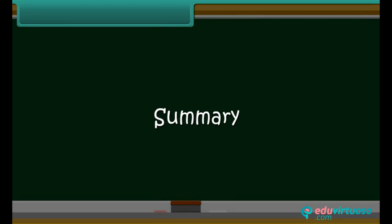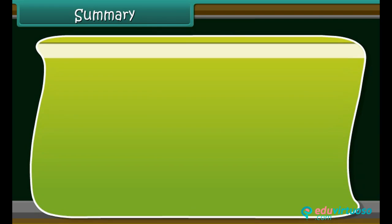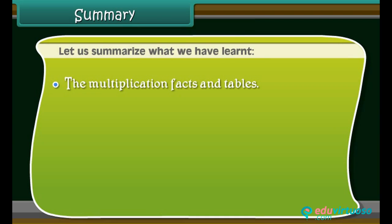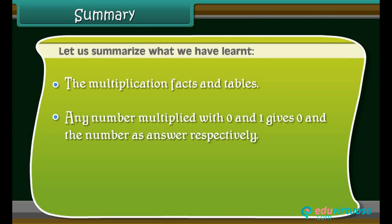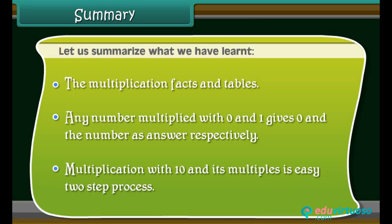Summary: Let us summarize what we have learned. The multiplication facts and tables. Any number multiplied with 0 and 1 gives 0 and the number as answer respectively. Multiplication with 10 and its multiples is an easy two-step process.